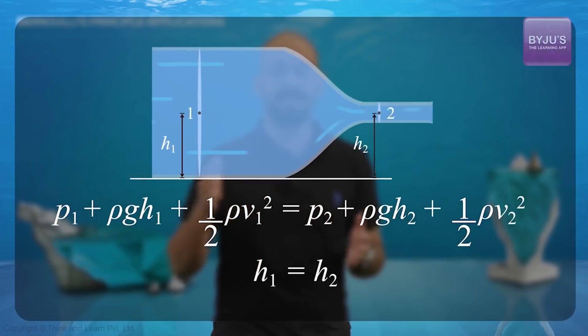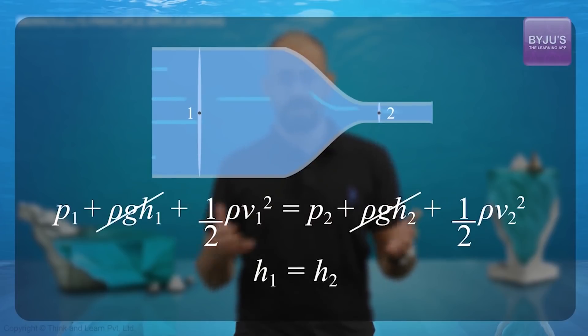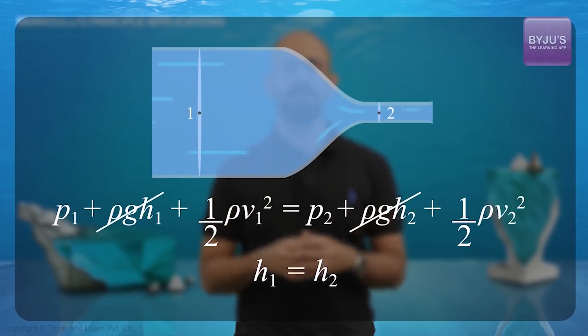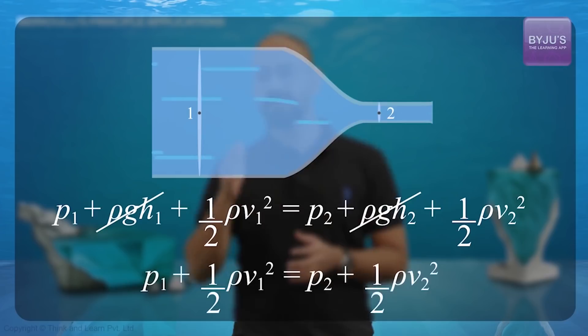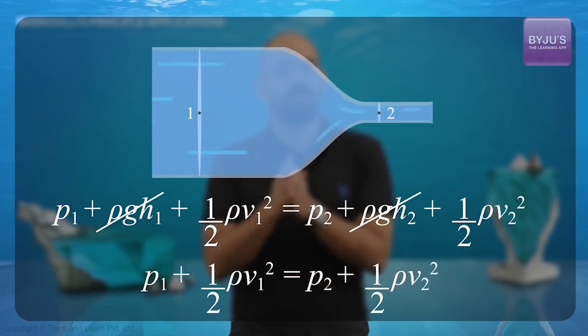Now obviously, h1 equals h2, so that term gets cancelled. So if I cancel that, what do I get? We get P1 plus half rho v1 squared equals P2 plus half rho v2 squared.